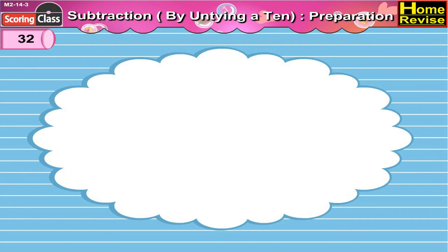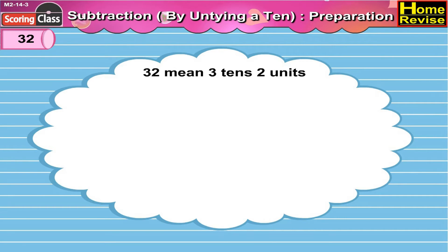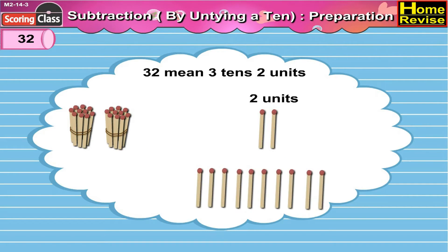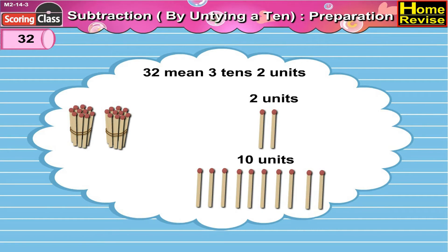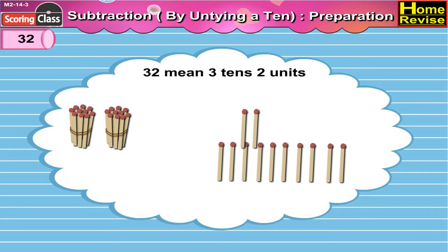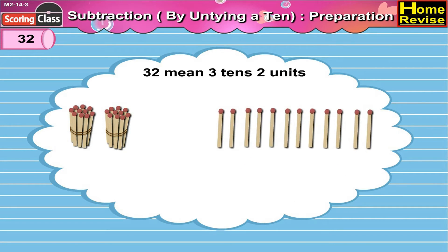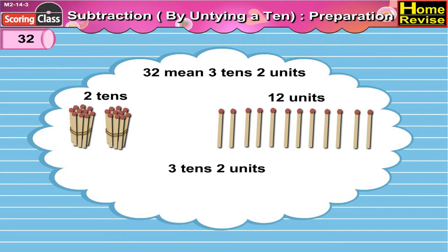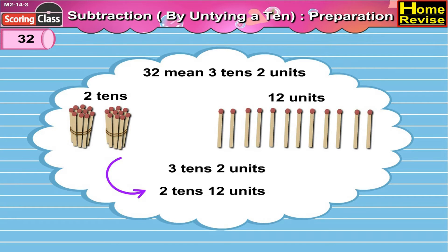Thirty-two means three tens, two units. If we untie one ten, then we have ten units. So thirty-two means two tens, twelve units. Three tens, two units means two tens, twelve units.